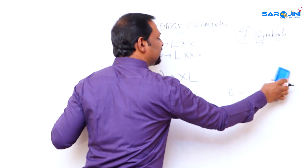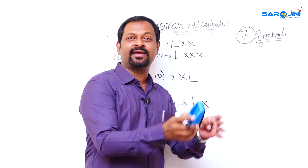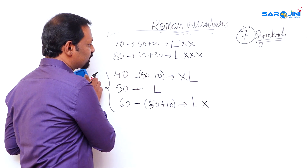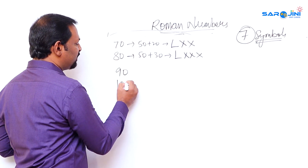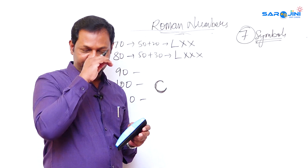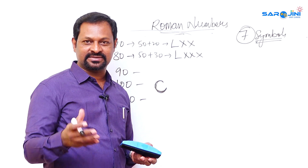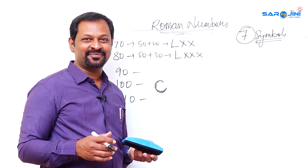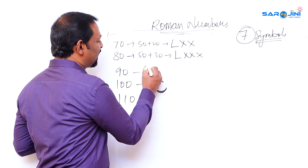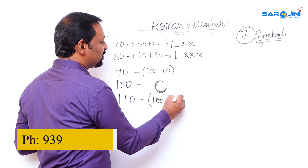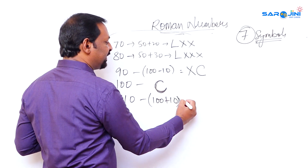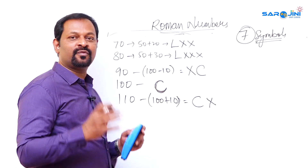For ninety, hundred, and hundred-ten — the same pattern as nine, ten, eleven applies. Hundred's symbol is C, from the word 'century' (a cricketer scoring hundred runs scores a century). Ninety is hundred minus ten, written as XC. Hundred-ten is hundred plus ten, written as CX.